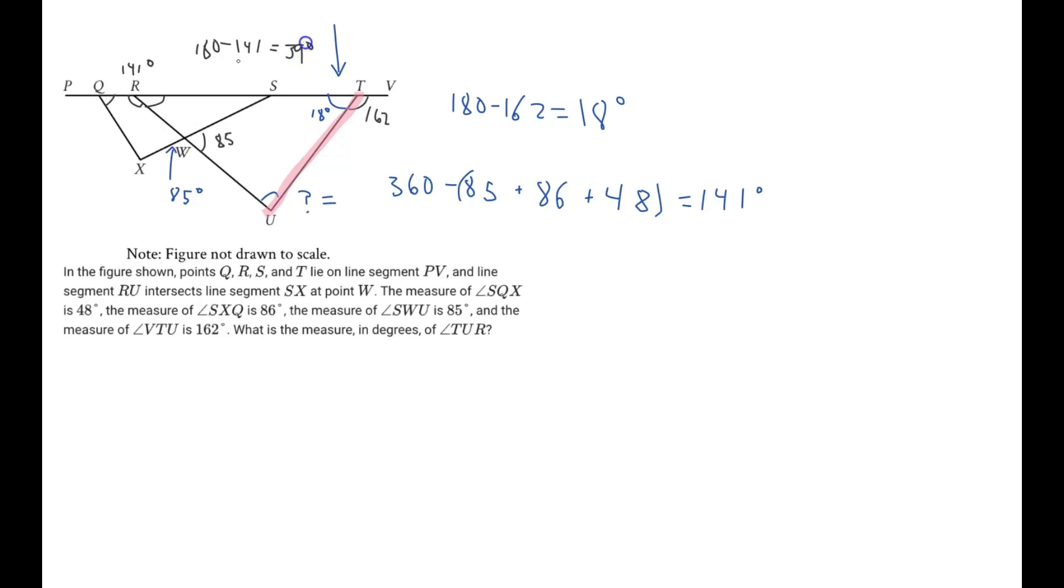And so, if we find this angle TRU, we now have two missing angles. We found the two missing angles of the triangle that we initially wanted to find, which was this one right here. So, we know that because a triangle has 180 degrees, we just found the 39 degrees in this corner right here. And we already found this one from the other calculation we did of 18 degrees for this angle. So, we can just add these together, subtract it from 180, and we get 123 degrees. And, yeah, that is our final answer for the measure of angle TUR.